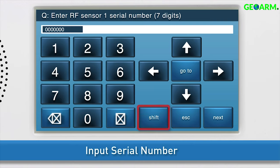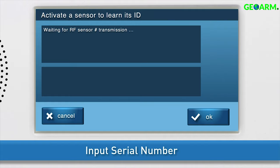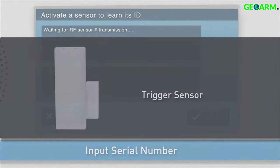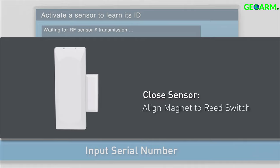Press Shift. Then Learn. You will see a message that the panel is waiting for the sensor transmission. Trigger the sensor by pulling the magnet and transmitter apart. Close the sensor again by aligning the magnet to the transmitter's read switch.